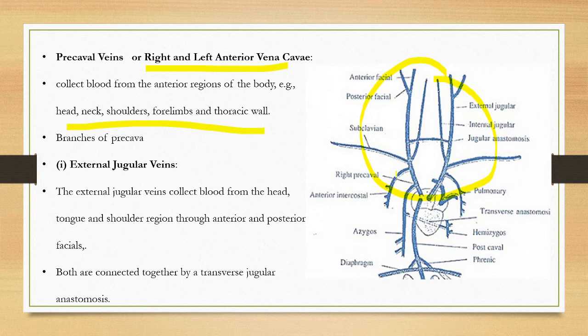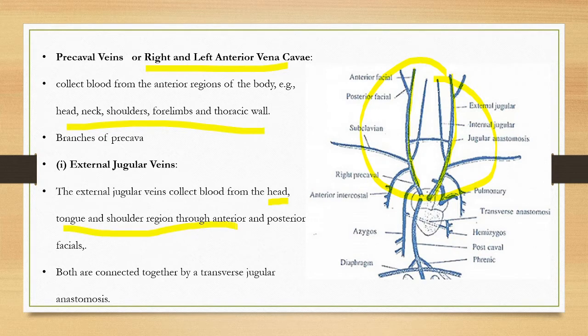The branches of the precaval include the external jugular vein. This is the right precaval vein and this is the left precaval. The first branch is the external jugular vein. The external jugular vein collects blood from the head region, neck, and shoulder region through anterior and posterior facial veins.